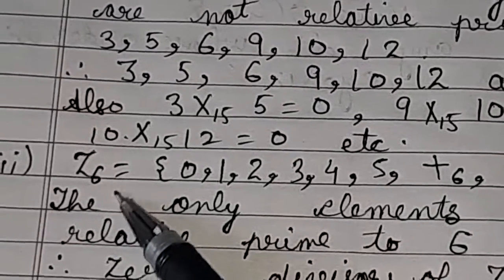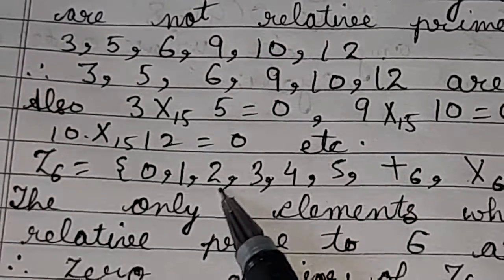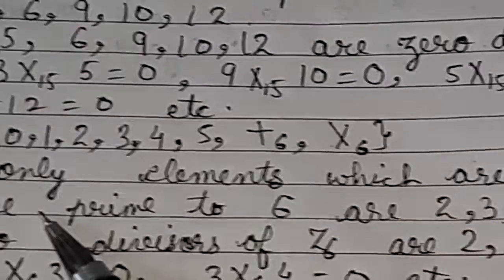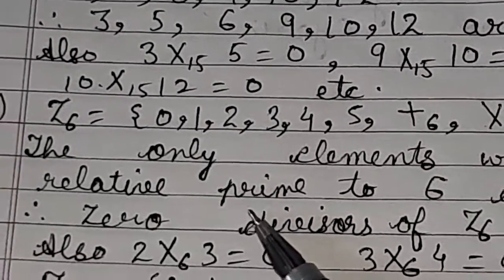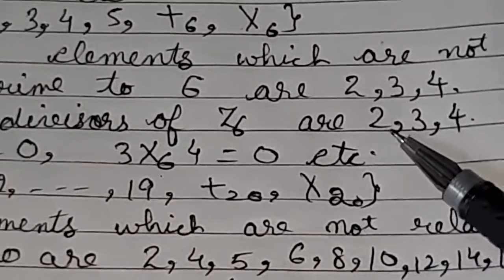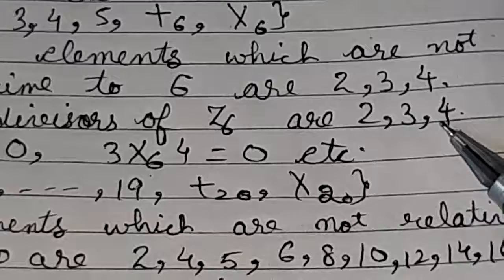Next is z6. We know z6 means 0, 1, 2, 3, 4, 5 plus modulo 6, multiplication modulo 6. Now again we have to find the elements which are not relatively prime to 6 which are 2, 3 and 4.